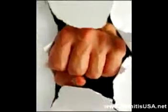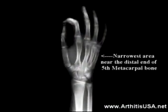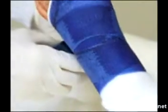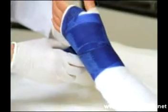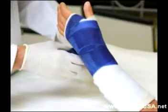Typically the fracture is at the narrowest area near the distal end of the metacarpal bone. The treatment is casting to immobilize the fracture and conservative therapy.